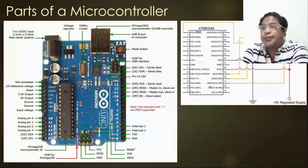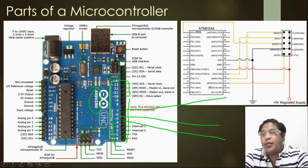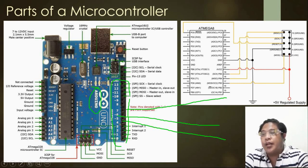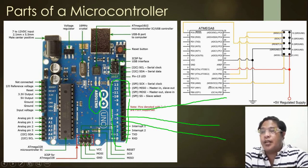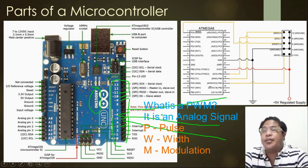Next, the parts of a microcontroller. The first part is the digital I/O — input and output. We have pins 0 through 13 for digital input and output, and among those we have six PWM pins: pin 3, pin 5, pin 6, pin 9, pin 10, and pin 11.